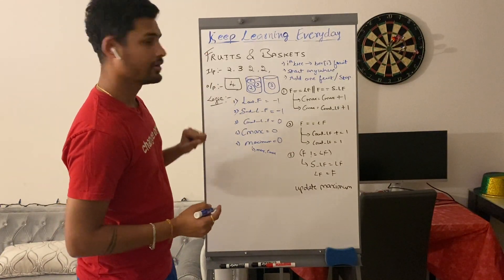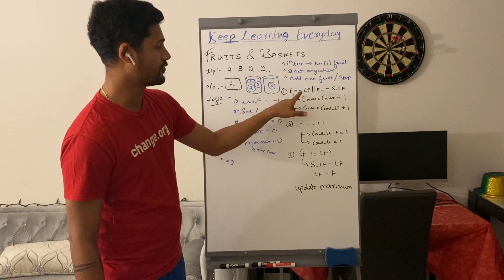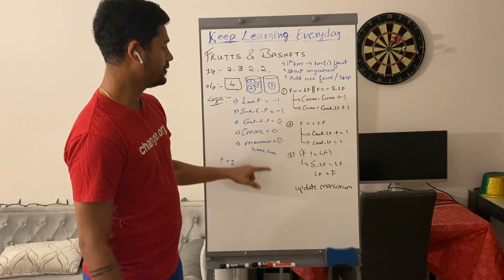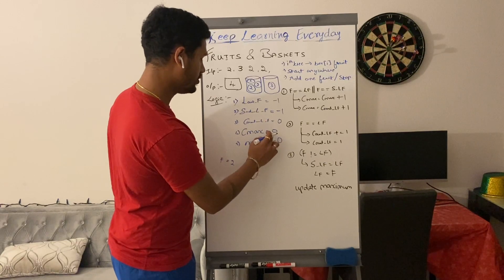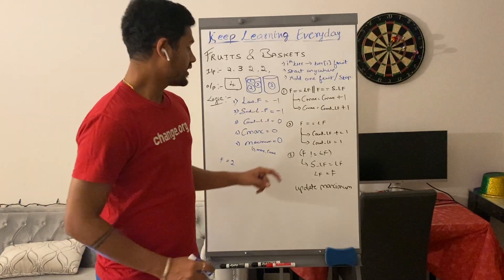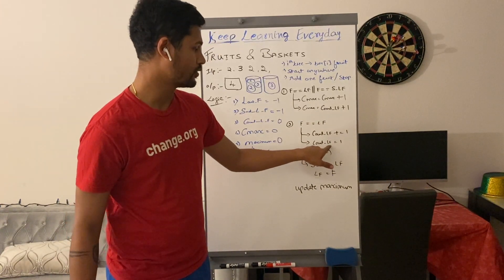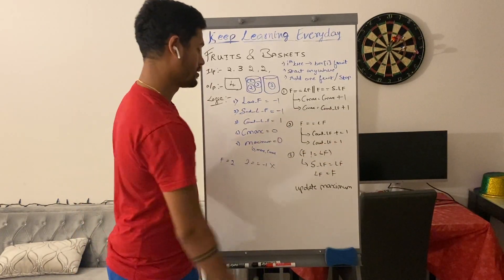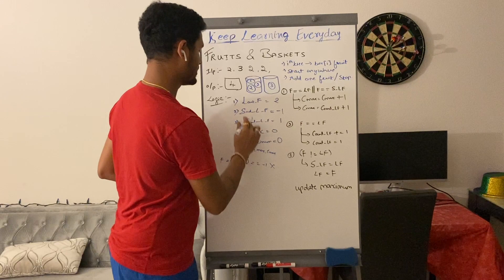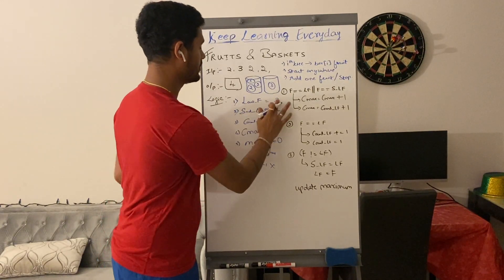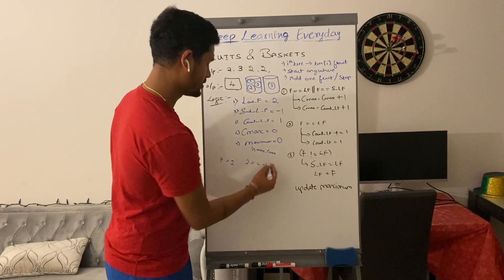We pick every element. For the first element, fruit becomes 2. We check if this fruit equals last_fruit or second_last_fruit — it does not equal either, so we go to the else case and update current_max with count_of_last_fruit plus 1, which is 0 + 1 = 1. Then we check if fruit equals last_fruit (2 vs -1) — it does not, so we update count_of_last_fruit to 1. We then update second_last_fruit to -1 and last_fruit to 2.